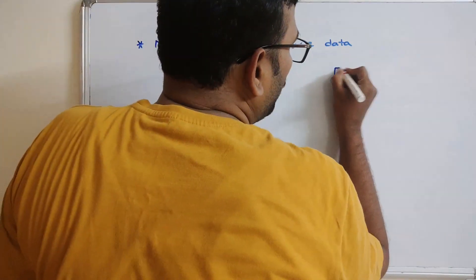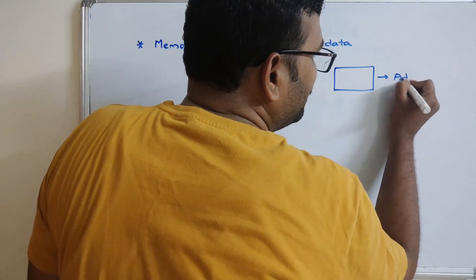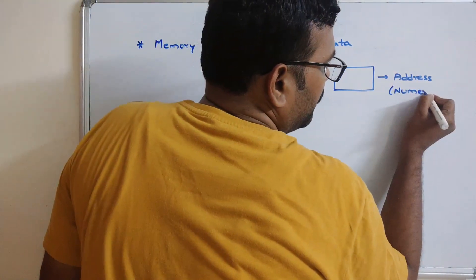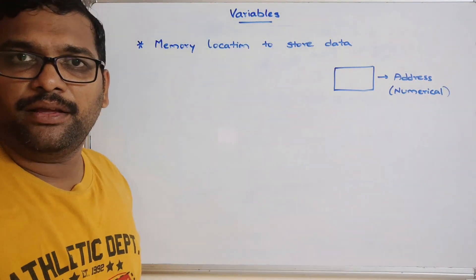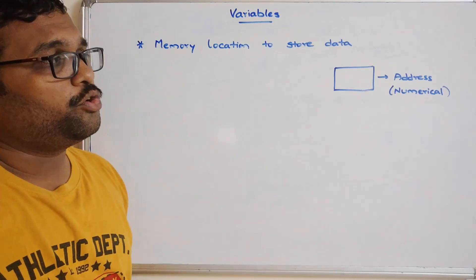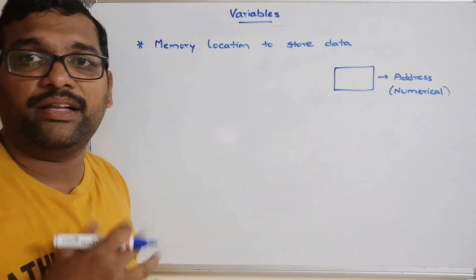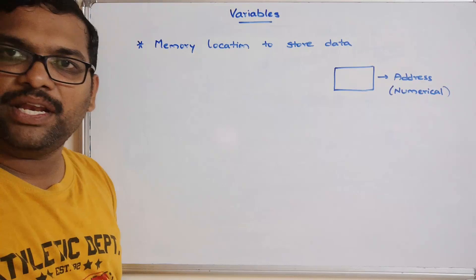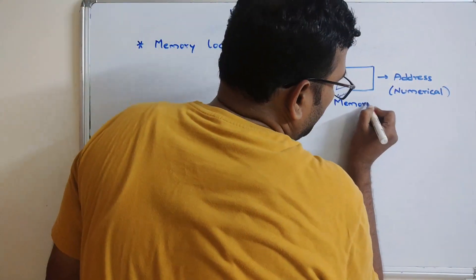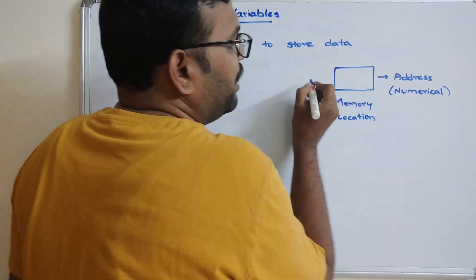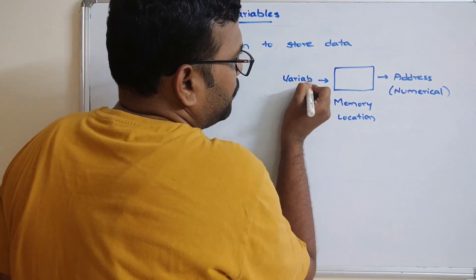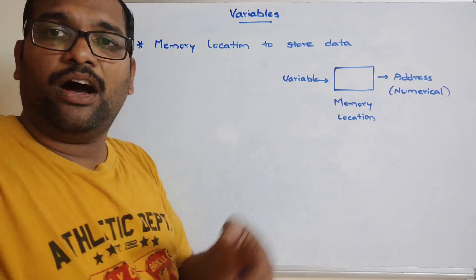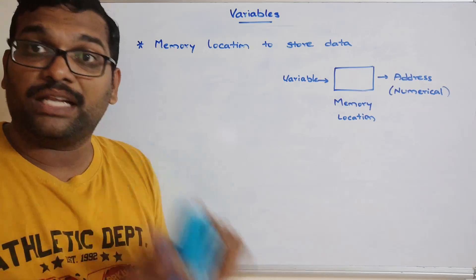A memory location is identified by its address, which is numerical. In our system we have a lot of memory, so it is practically impossible to remember the numerical address in order to retrieve data whenever it is required. That's why we give an alternate name to a memory location, which we call a variable. So a variable is nothing but a memory location with an alternate name where we can store data.